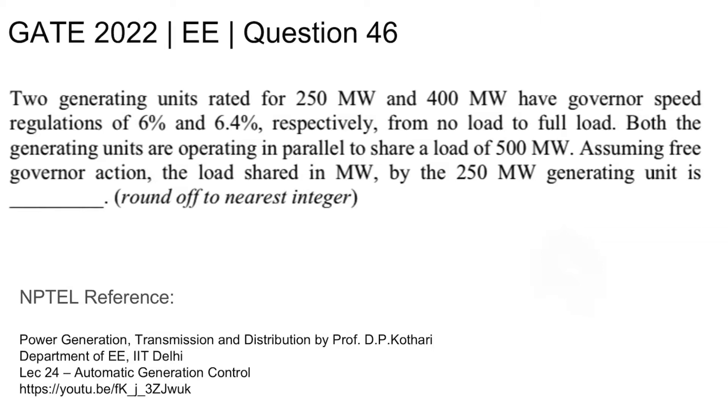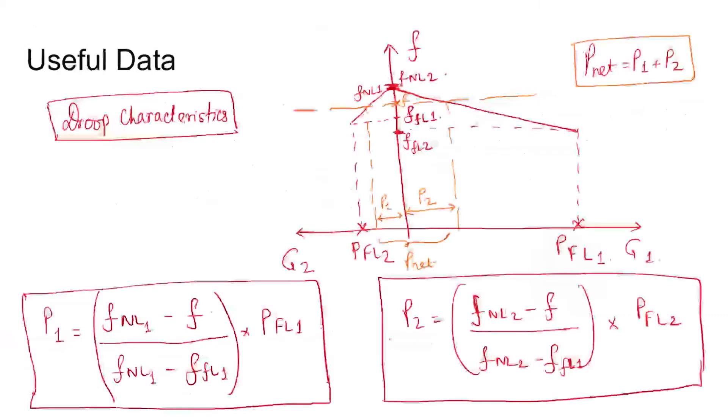For useful data, you need to understand the droop characteristics of generators. As the power generation by generator increases, the operating frequency decreases and this phenomenon is known as the droop phenomenon.